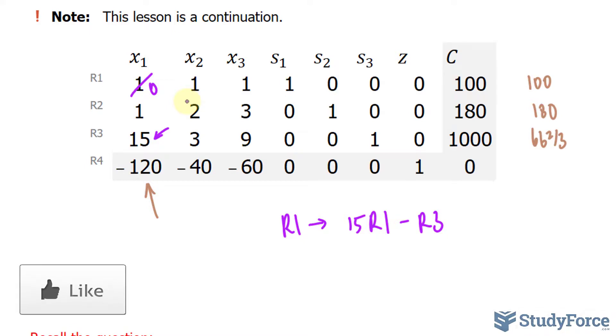15 times 1 is 15, minus 3, that becomes a 12. And you'll continue to do this for the rest of the numbers. This becomes a 6. Here we have a 15, 0, negative 1, 0. And you can always spot if it's 0, if both of them are 0. And this last number becomes 500.